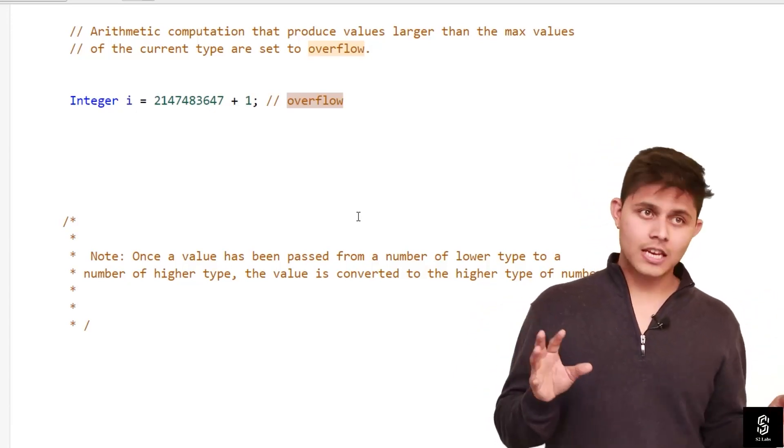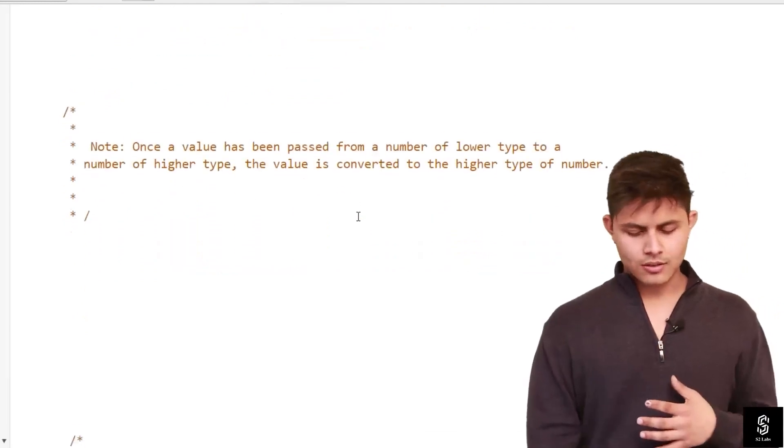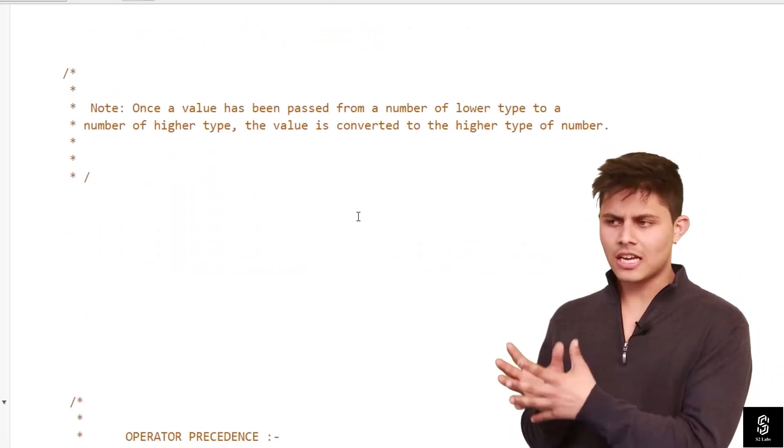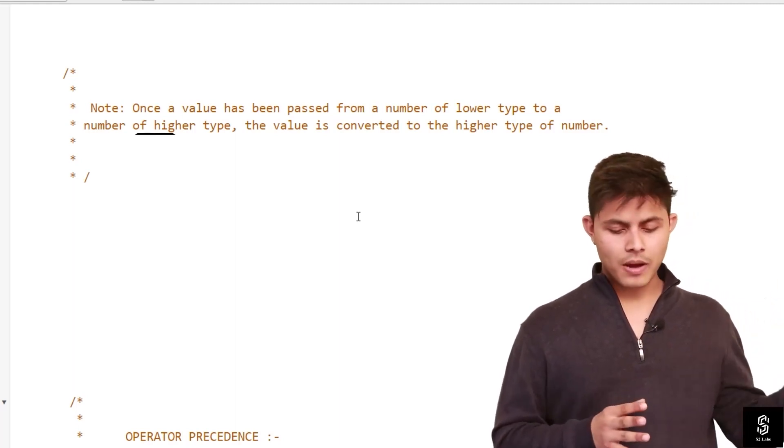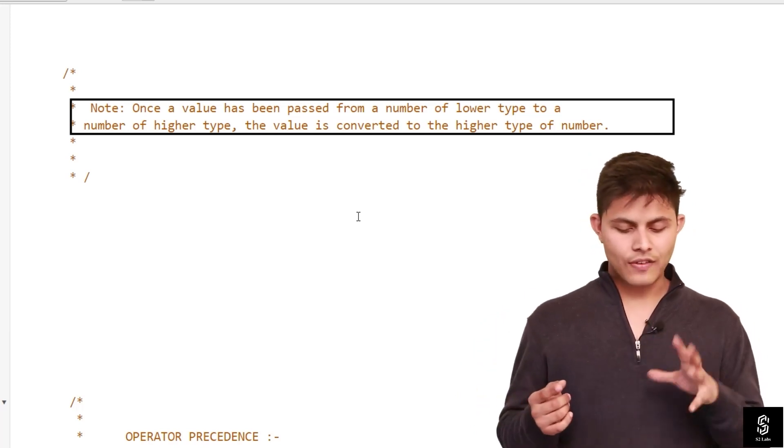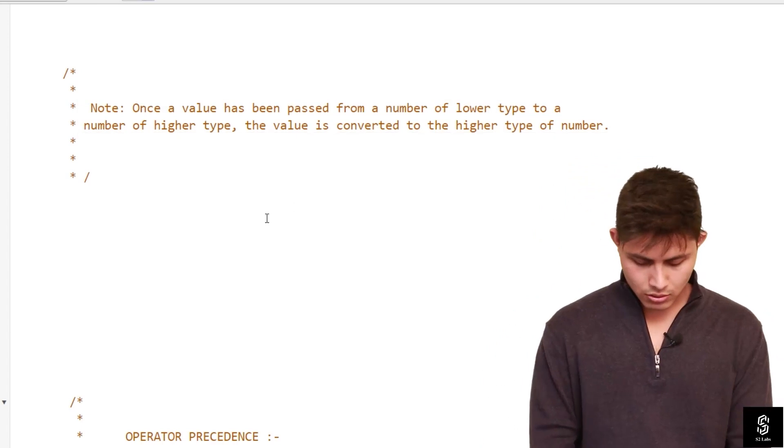There is one note that you need to understand. I've already explained it to you earlier, but let's have a look at it once again. Once a value has been passed from a number of lower type to a number of higher type, the value is converted to the higher type of number. It's very simple.